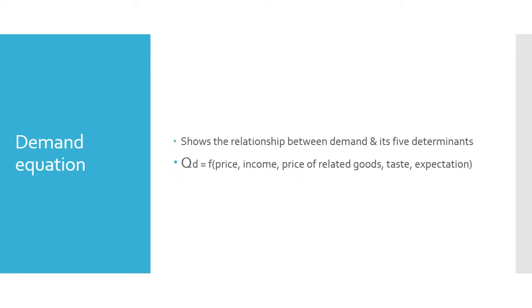Next is the demand equation or demand function, which expresses the relationship between demand and its five determinants. The equation states that the quantity demanded of a product is a function of five factors: price, income, price of related goods, tastes, and expectation.